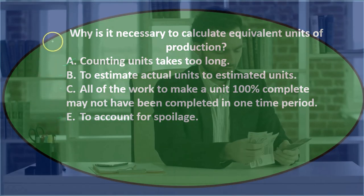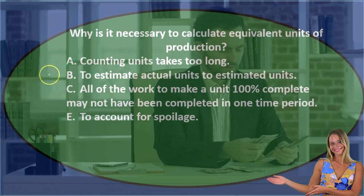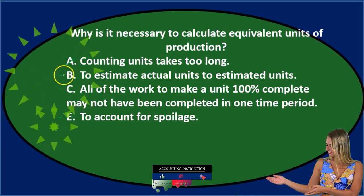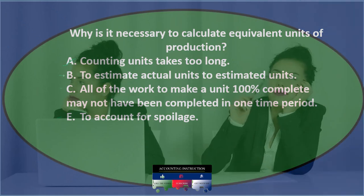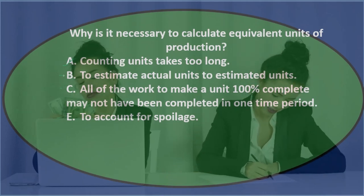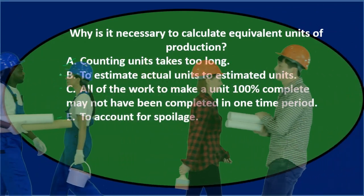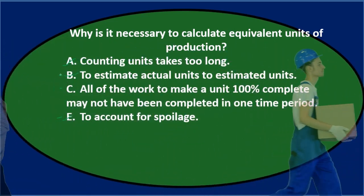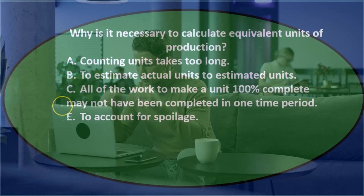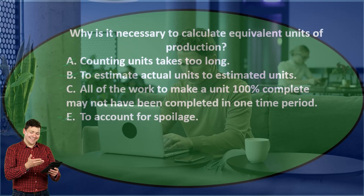Going through again: B and E are somewhat similar. B seems more like a budgeting tool — comparing actual to estimated to see how we did. E, accounting for spoilage, is also not really the purpose here. What we're actually doing is allocating costs to units that aren't exactly completed. We're not comparing beginning estimates to end results; we're figuring out equivalent units to allocate costs to the proper process. So C is the correct answer.